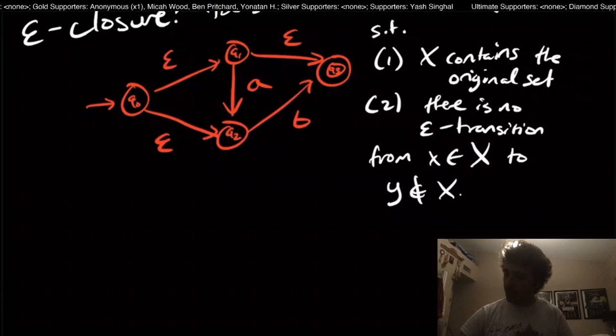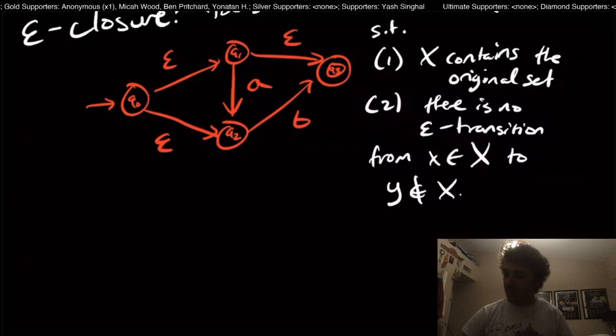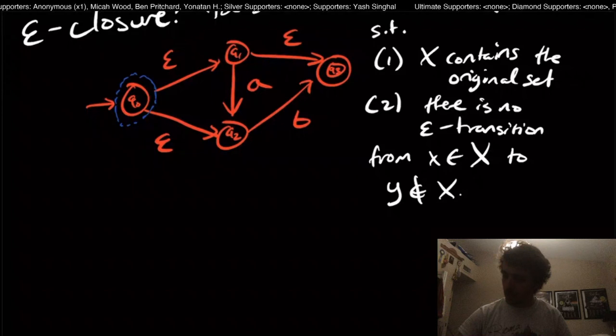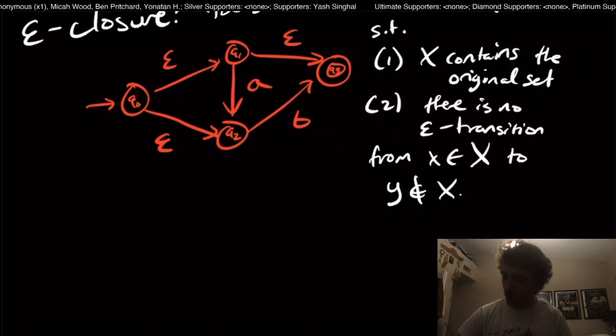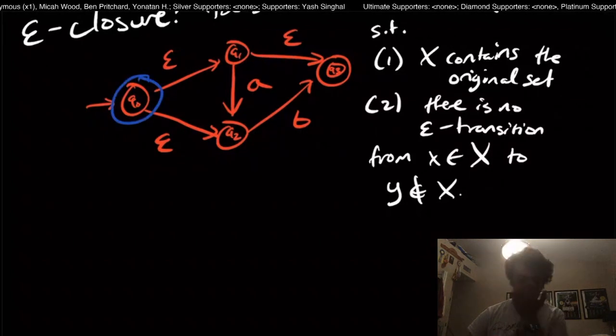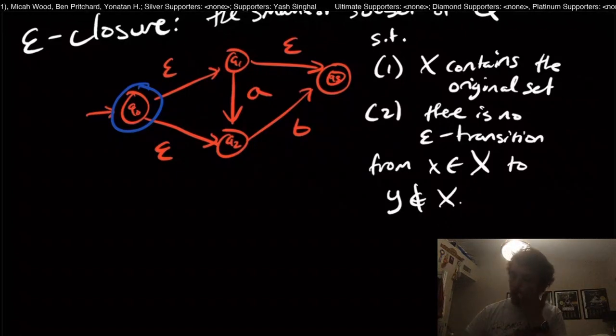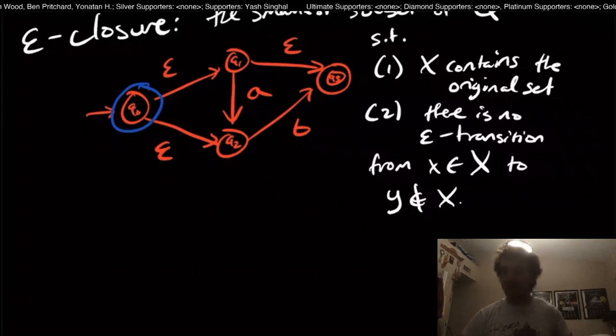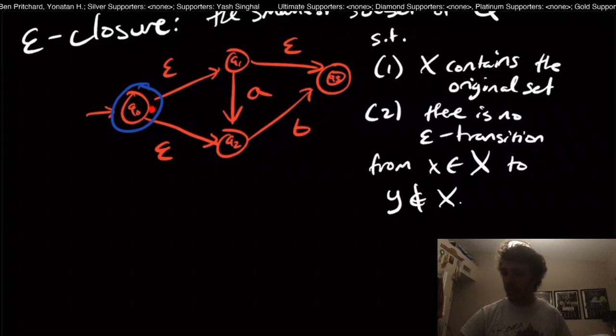So what does that mean? Well, let's just take this NFA right here. The set that I'm originally starting with is this Q0 state right here. Maybe I'll do it in a solid circle, so it's easier to remove. So the blue circle is where I'm currently listing states in. Well, we got to start including other states in this set X, because we're taking the epsilon closure of this state.